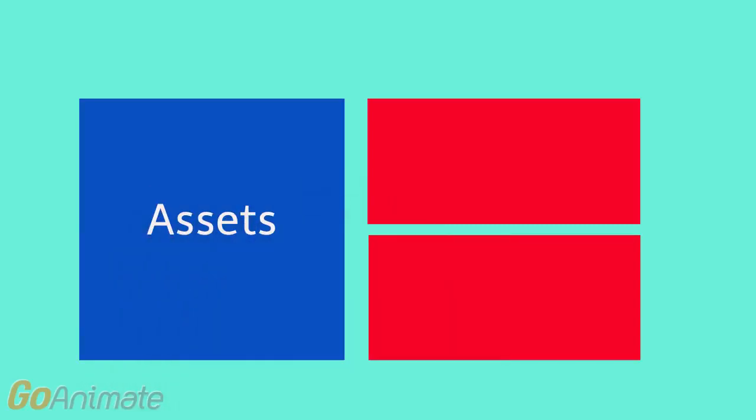Assets make us happy. They're the things we own in the business — we use these to make money. On the right-hand side we have two smaller red boxes which represent where we get the money from to pay for the assets.